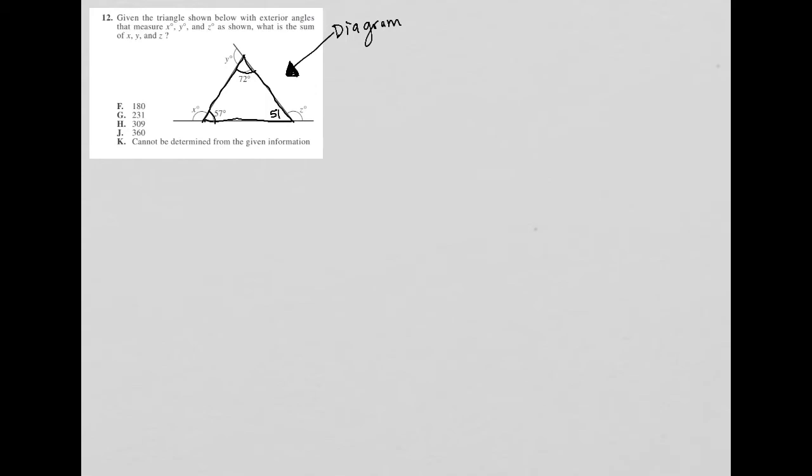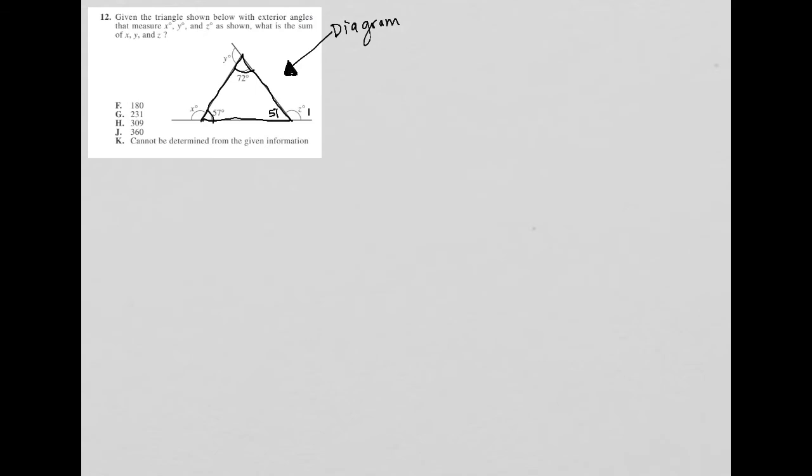Secondly, I know that all of the angles labeled X, Y, and Z are supplementary angles to the angles that we have. So for instance, 180 minus 51, which is 129, is what angle Z must be.